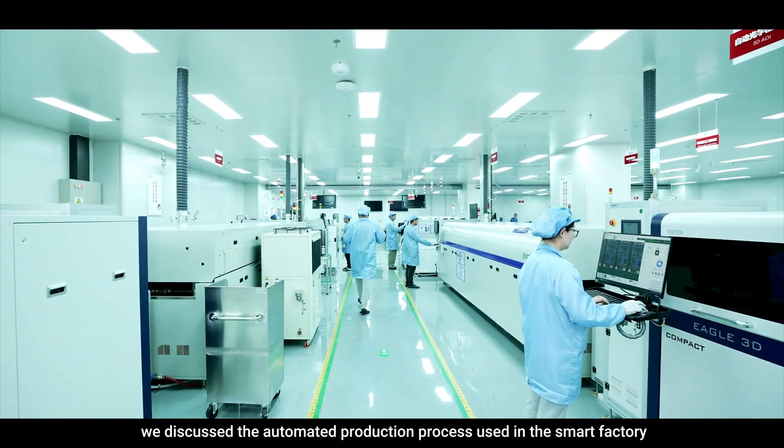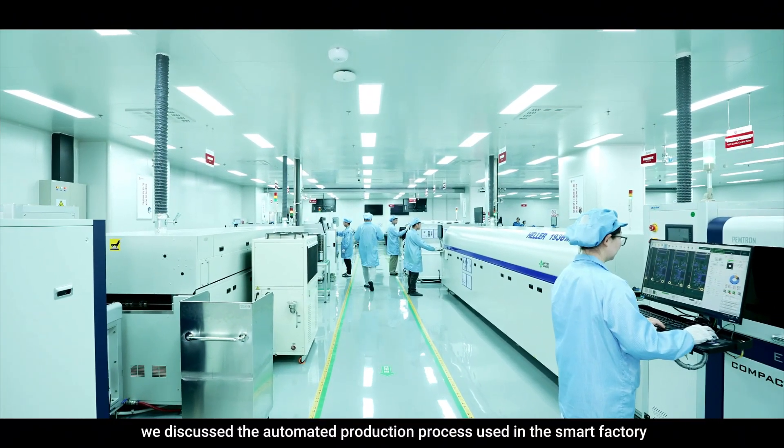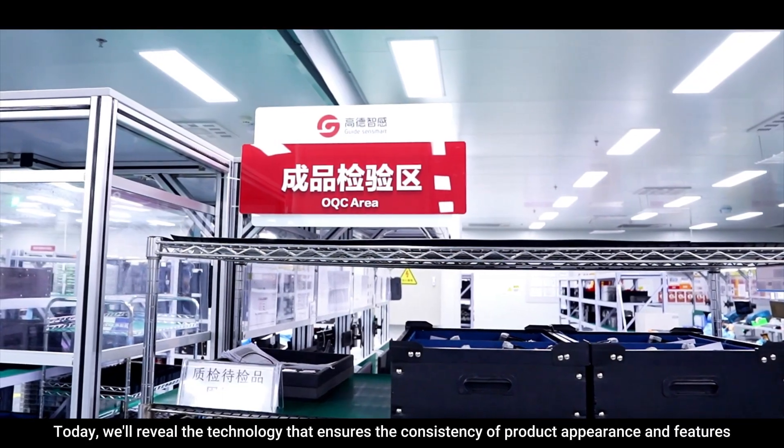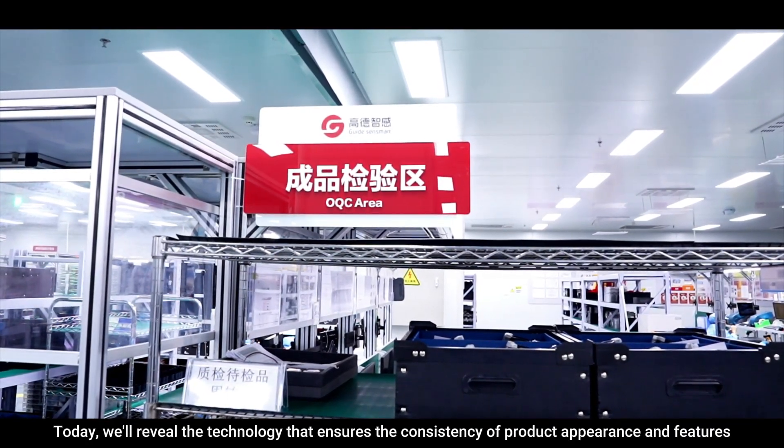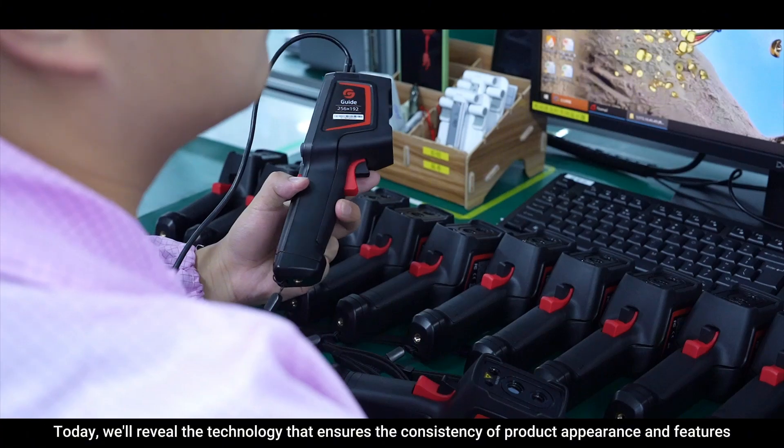In the last video, we discussed the automated production process used in the Smart Factory. Today, we'll reveal the technology that ensures the consistency of product appearance and features.